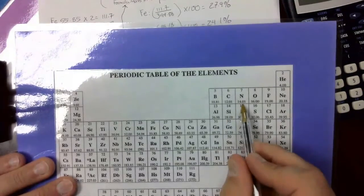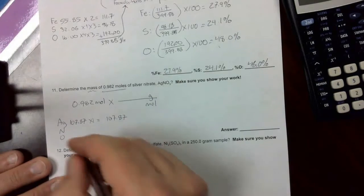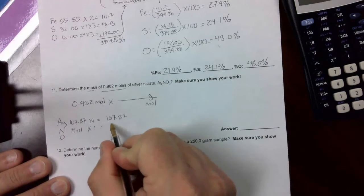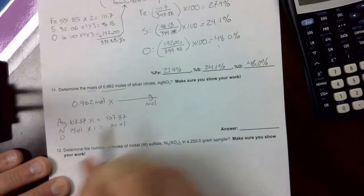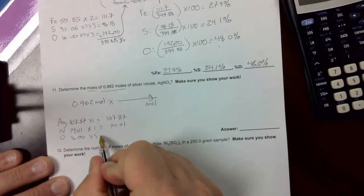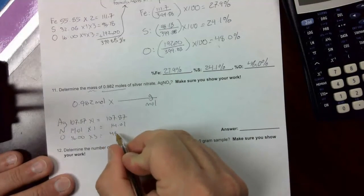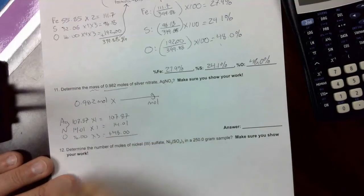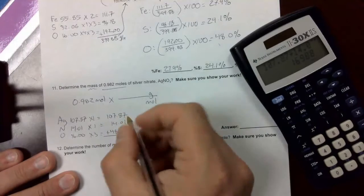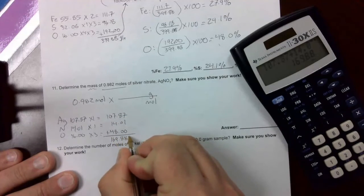Nitrogen, its mass on the periodic table is 14.01. Times the subscript on nitrogen, which is 1. Again, straightforward math. Oxygen, we don't even have to look it up. We know it now. It's 16 times the subscript on oxygen, which is 3. 16 times 3 is 48. Now, we need to add all that together to get the molar mass of this compound. So we'll use our calculator. 107.87 plus 14.01 plus 48. We get 169.88 grams per mole.